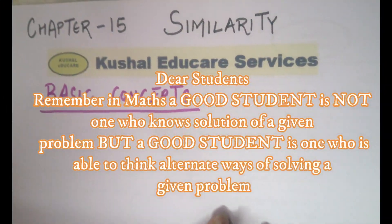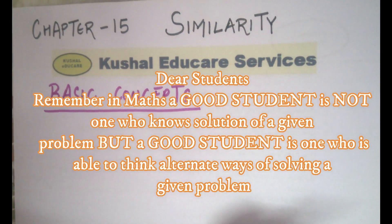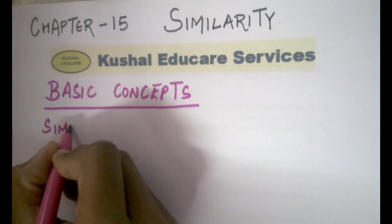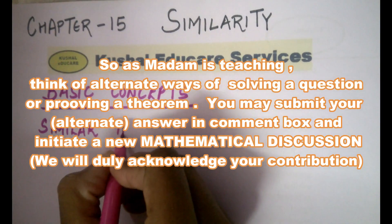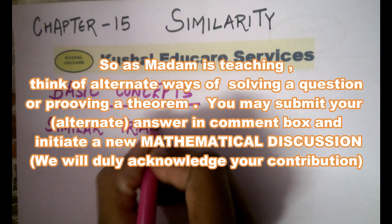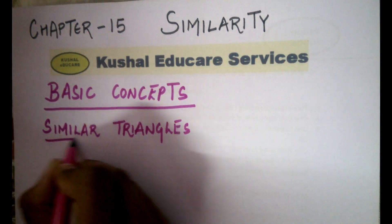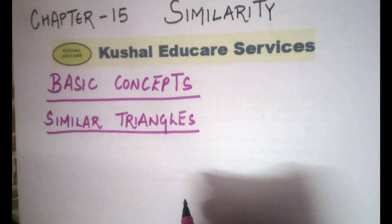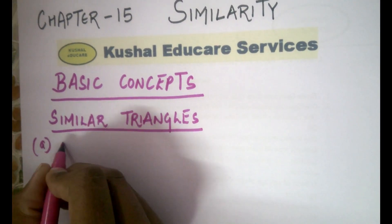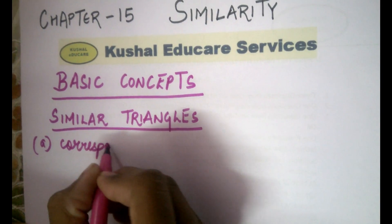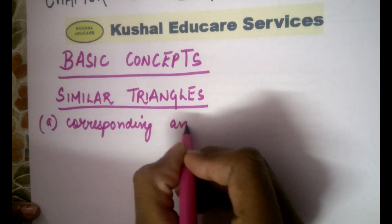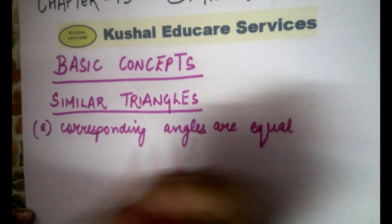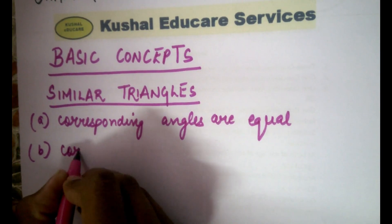We are starting the chapter on similarity, where we will discuss some basic concepts. Two triangles are said to be similar if their corresponding angles are equal and their corresponding sides are proportional.